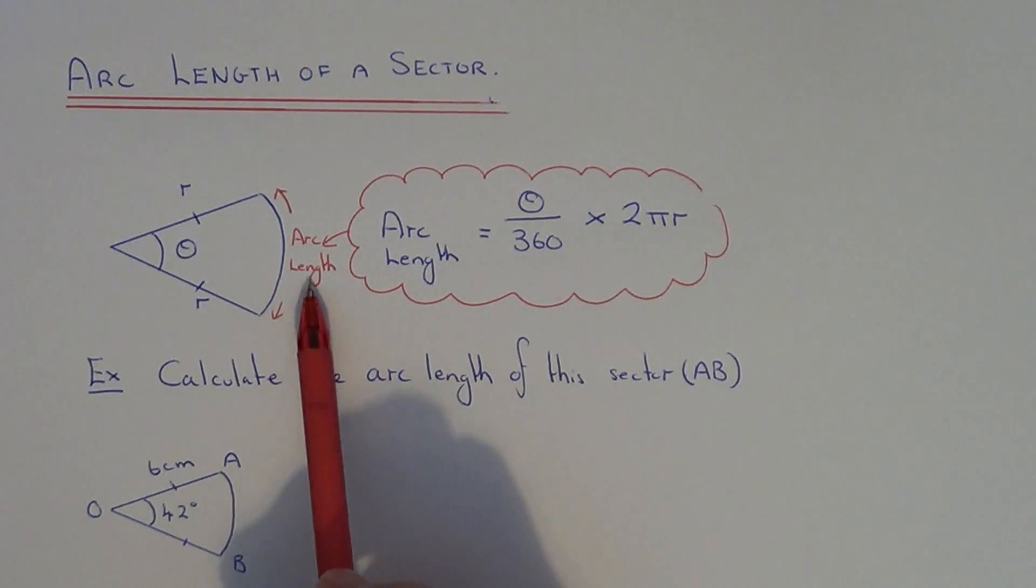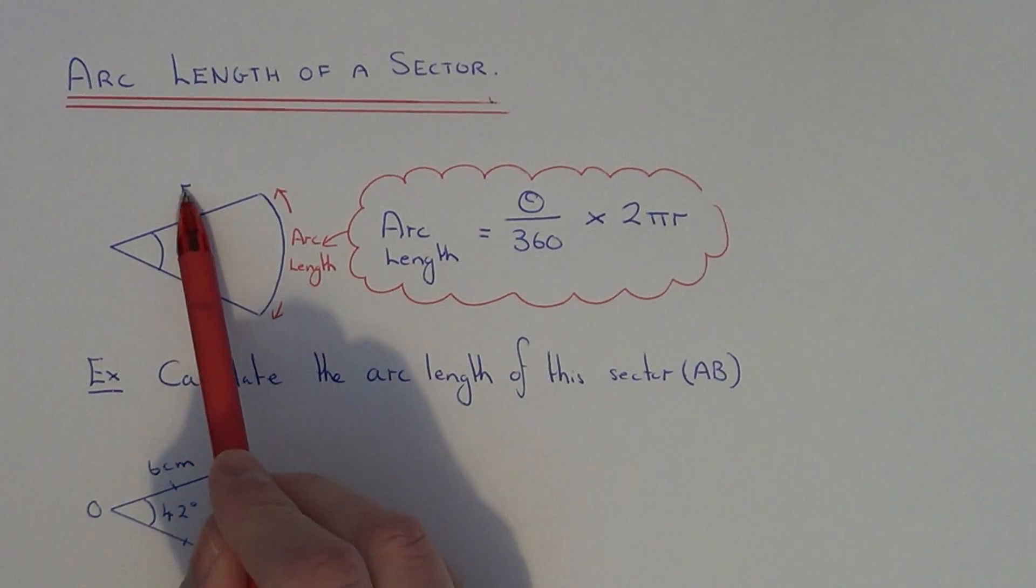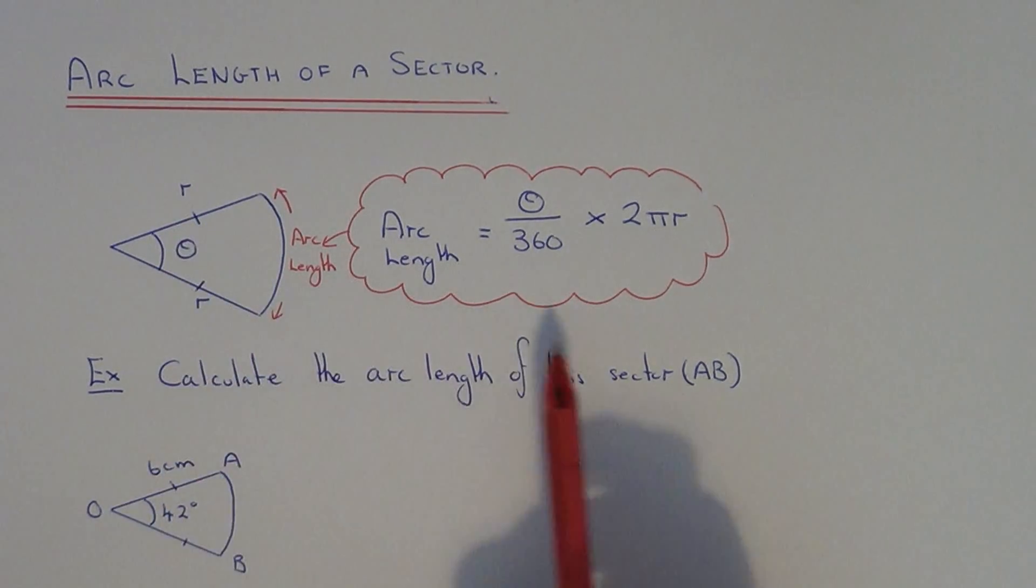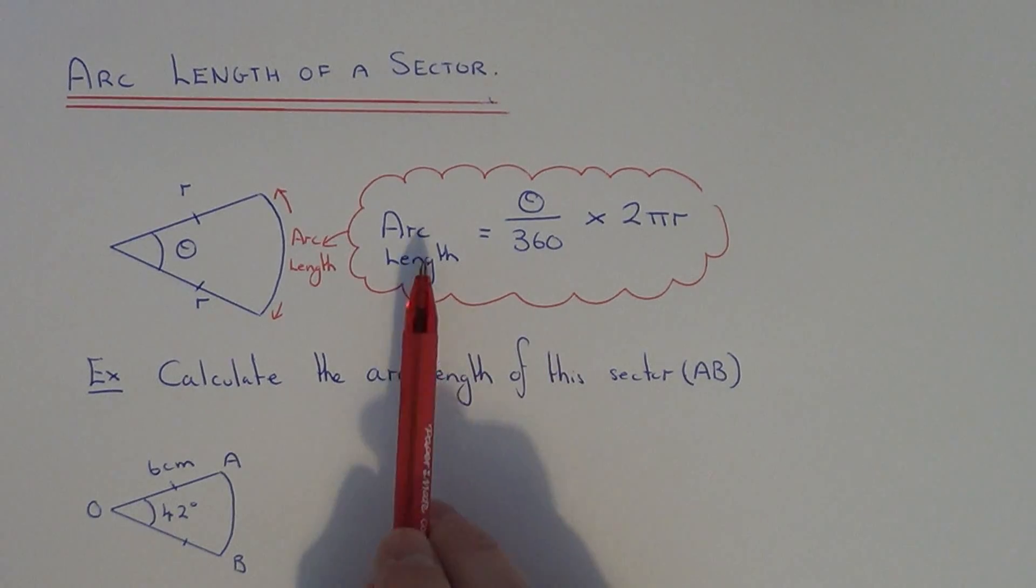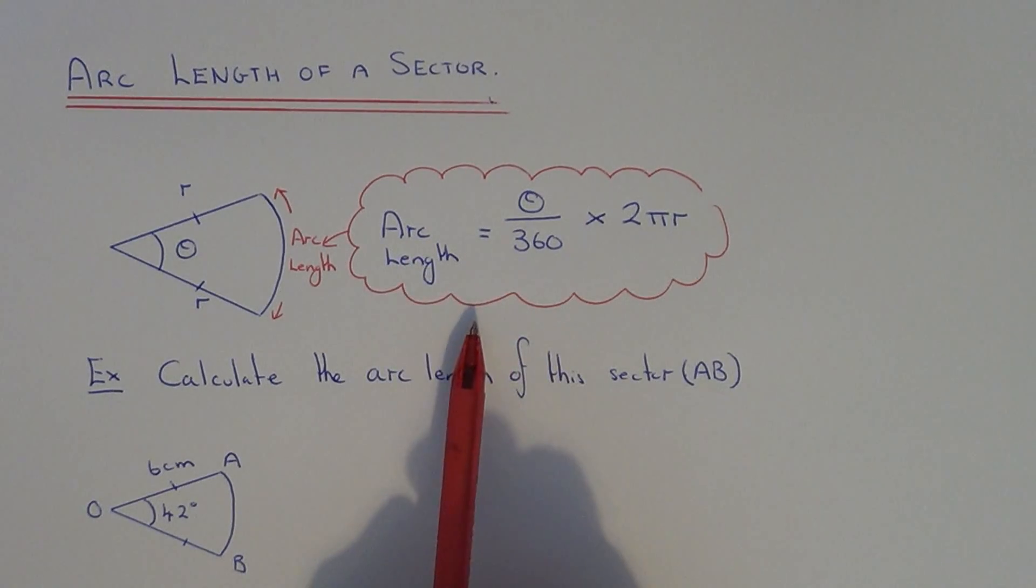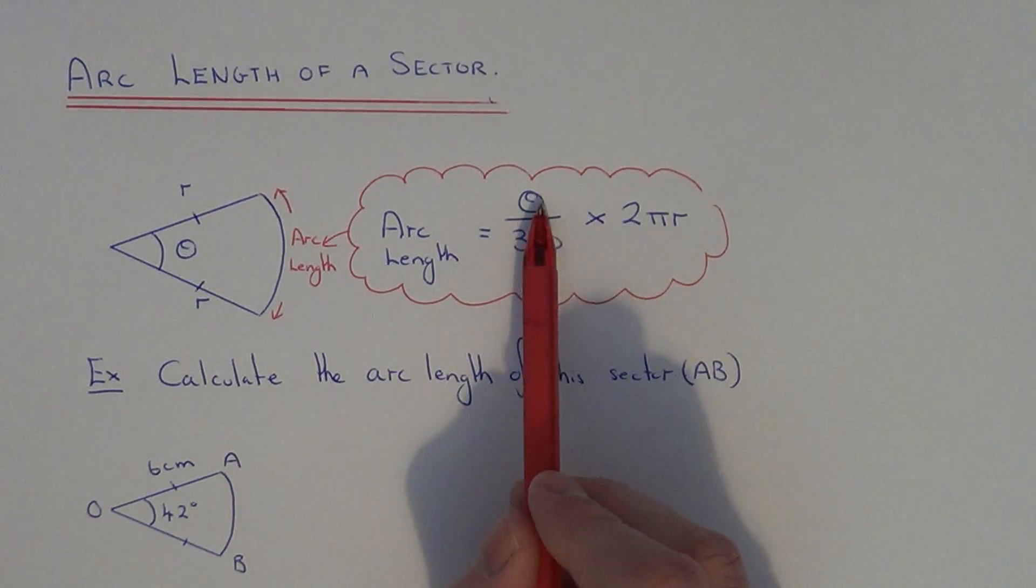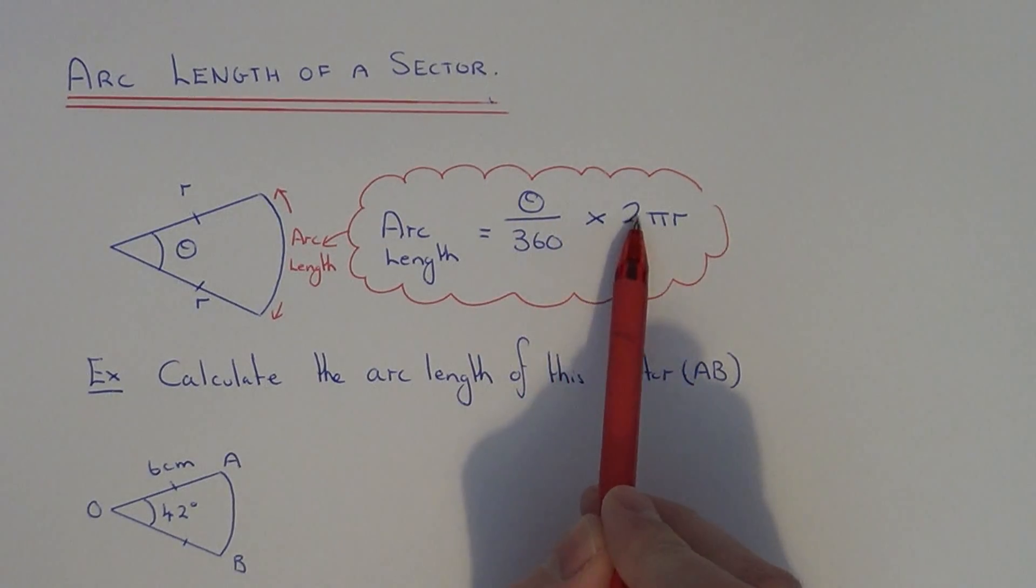To work out the arc length you need to know the angle and you need to know the radius of the sector. So we can work it out by using this formula here. We do theta divided by 360 times 2πr.